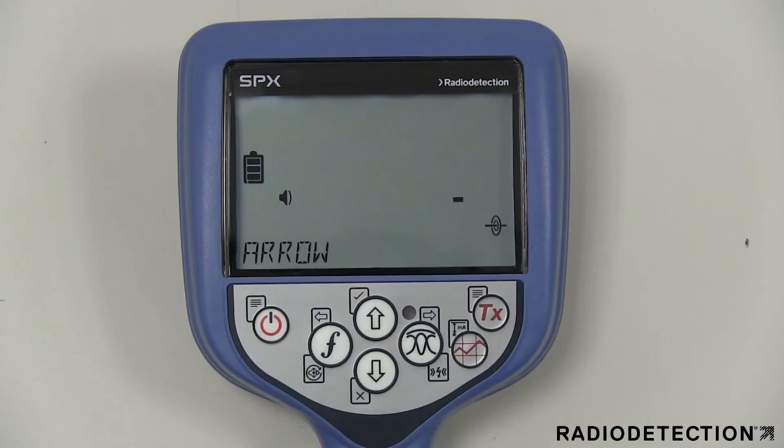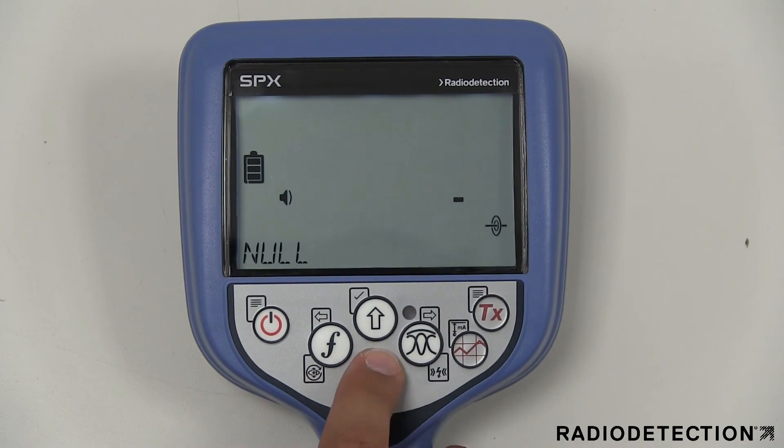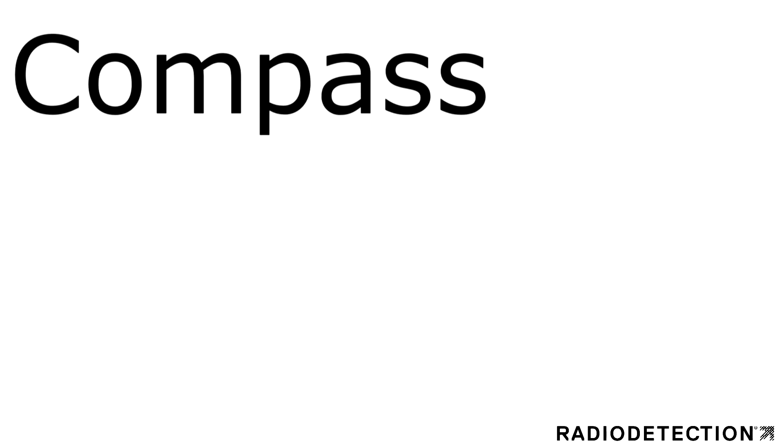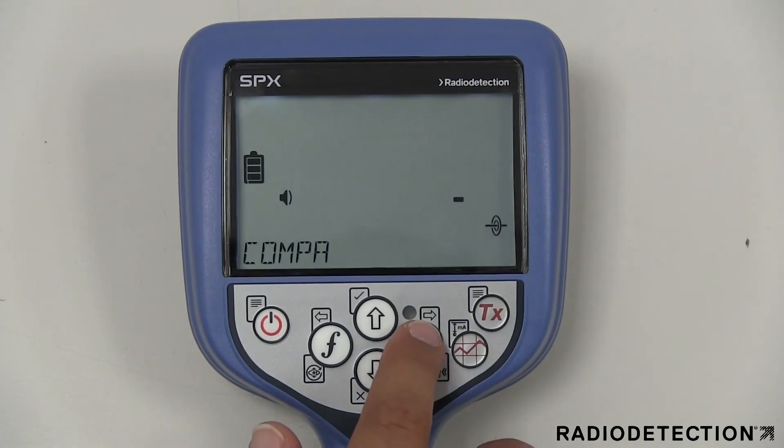The arrow option gives you the option of displaying proportional, guidance guide, or null arrows in peak plus mode. The comp option allows you to enable or disable the display of the compass feature.